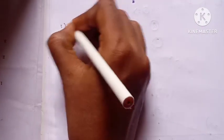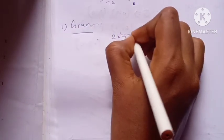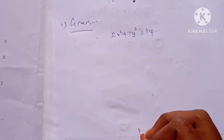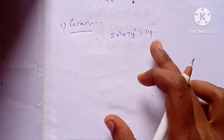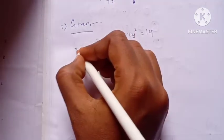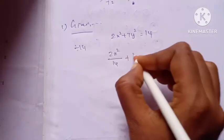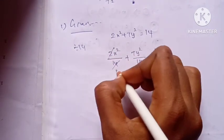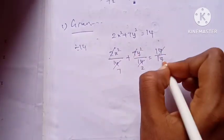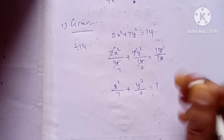The given equation is 2x² plus 7y² is equal to 14. We need to express this as an ellipse in standard form equal to 1. Dividing through by 14: 2x²/14 plus 7y²/14 equals 1, which simplifies to x²/7 plus y²/2 equals 1.